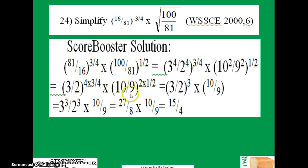You have 10/9 raised to power 2 times 1/2. This 4 cancels 4, 2 cancels 2, and you have 3/2 raised to power 3, then 10/9.